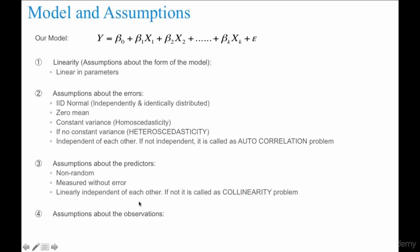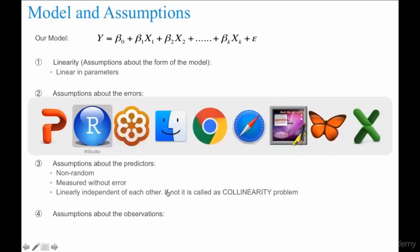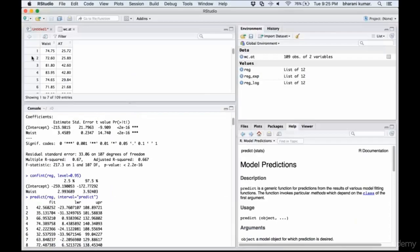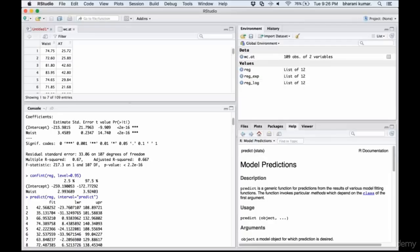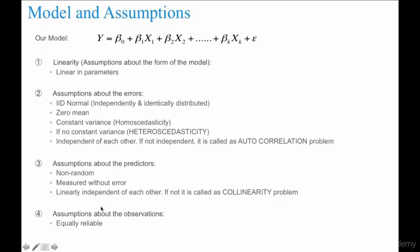Each observation is a record. For example, each row is an observation. And each observation should be equally reliable. You cannot say that the first 10 entries are accurate, the rest of the entries are entered based on some high level assumption. You cannot say that. Each and every record, each and every observation should be equally reliable.